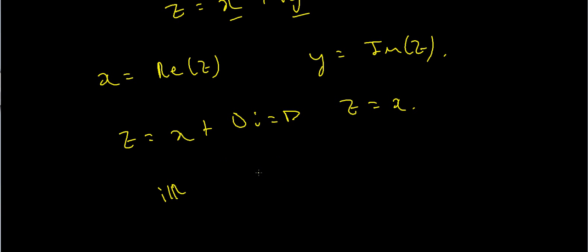So if x is equal to zero, then I've got z is equal to zero plus iy, which is just iy. So I'm left with z equals iy, something which is purely imaginary with a real part of zero. So that's what I mean by a complex number.